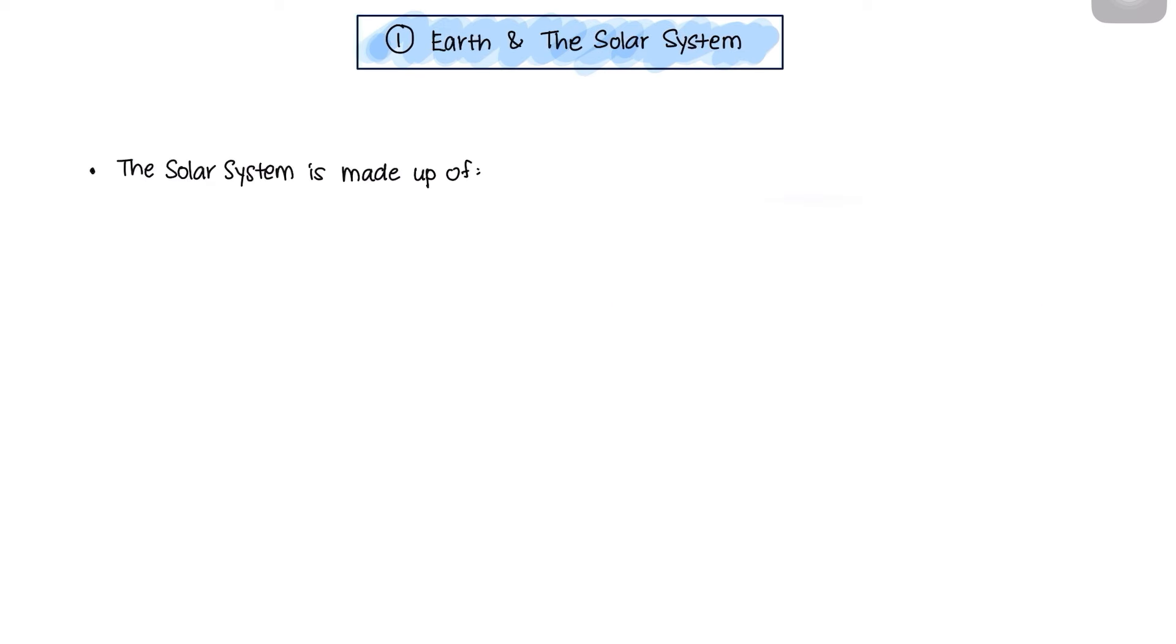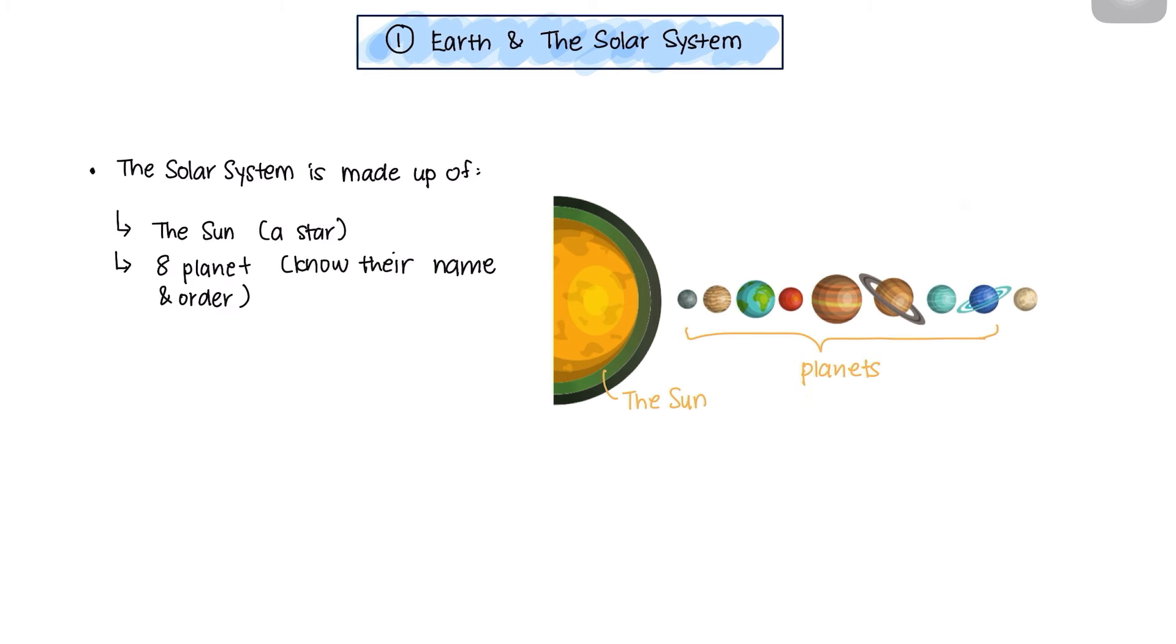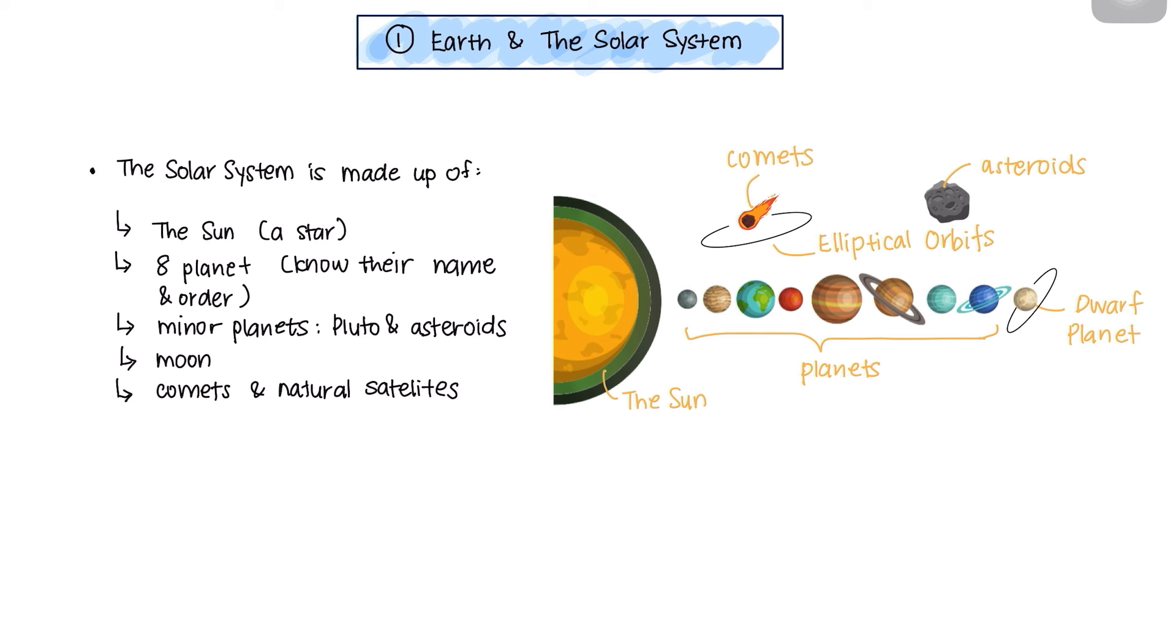For the solar system, you should know that the solar system is made of the Sun, eight planets—make sure you know their name and the order—minor planets like Pluto and asteroids, moons, comets and natural satellites.